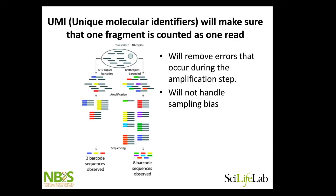The 10x pipeline and all these droplet-based methods use UMIs together with the cell barcode so that we can pool multiple cells and sequence them together.